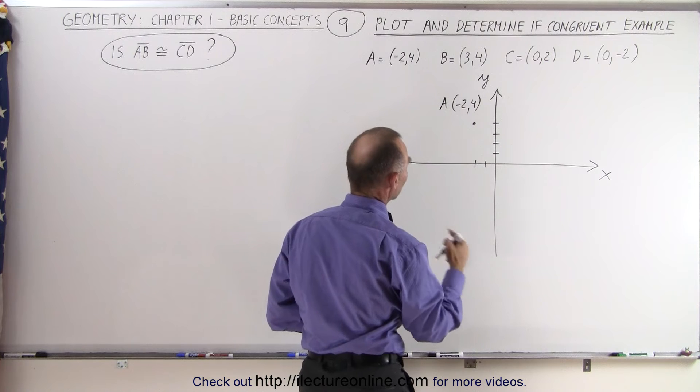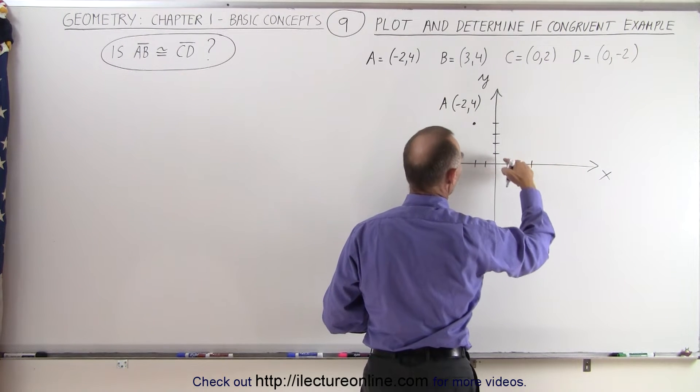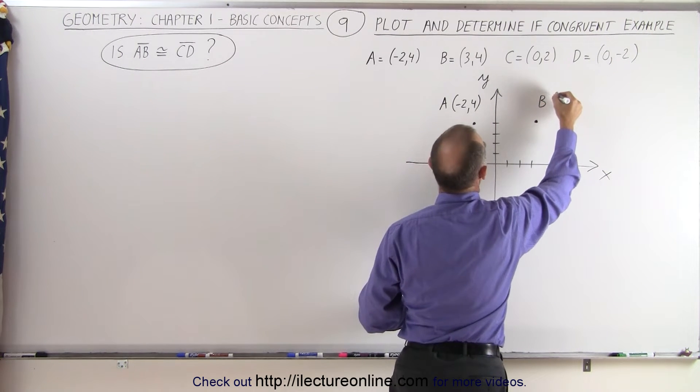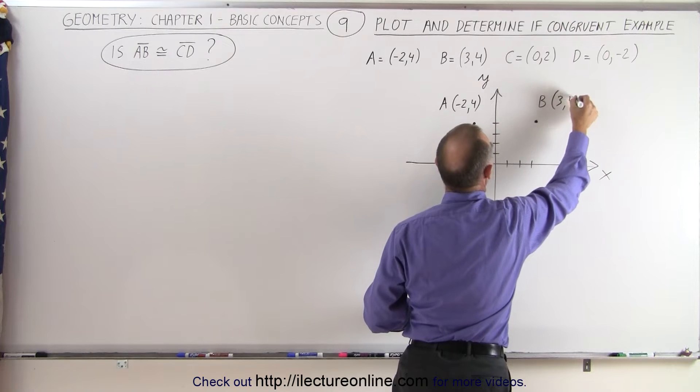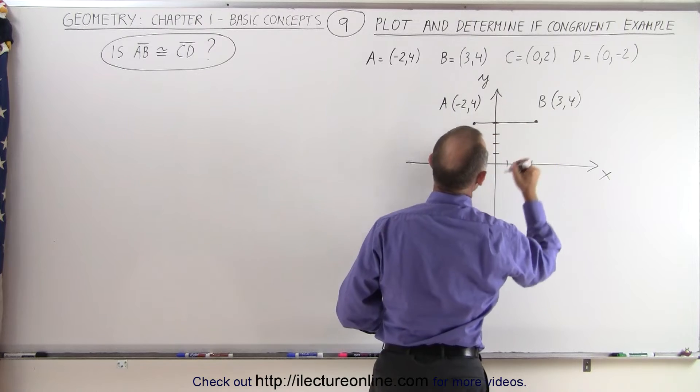Now point B is 3 and 4, so we go 1, 2, 3 in the x-direction, 4 in the y-direction. So that gives us this point right there, that's point B, and the coordinates are 3 and 4 for x and y. So now here we have a line segment going from A to B.